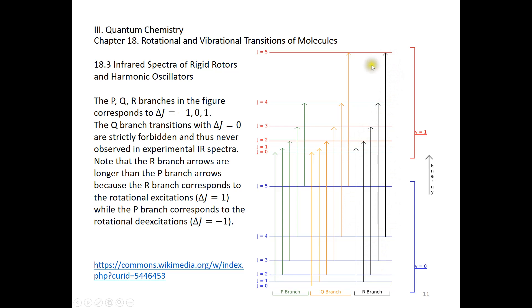In the P branch, J can go from 1 to 0, 2 to 1, 3 to 2, 4 to 3, and then 5 to 4.